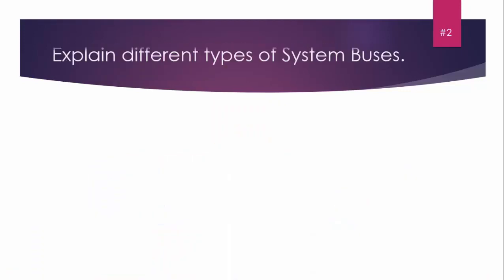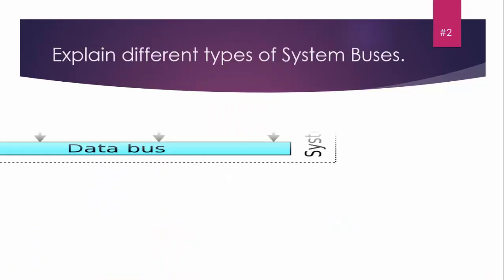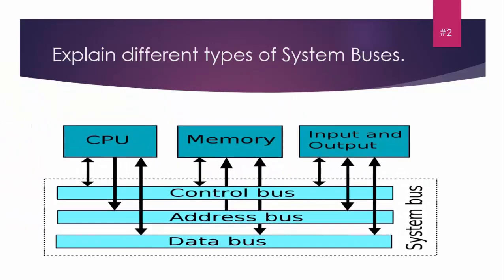Question number two: Explain different types of system buses. System buses are of three types: control bus, address bus, and data bus. Control bus moves control, address bus contains addresses, data bus moves data. These buses are used for internal communication of the system. You'll explain each one, define them, and draw diagrams. Diagrams are also available in the book if you have difficulty.